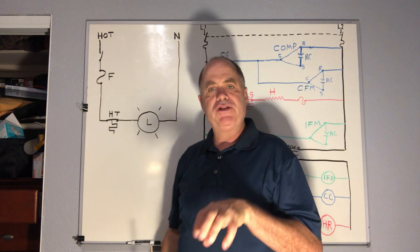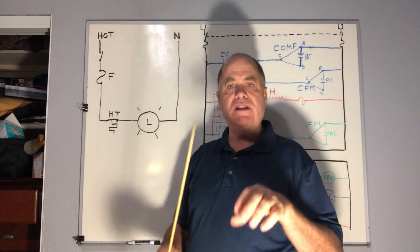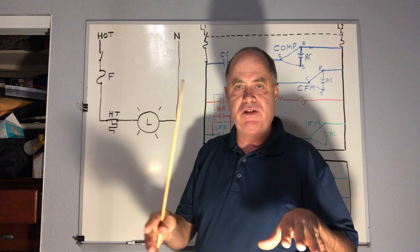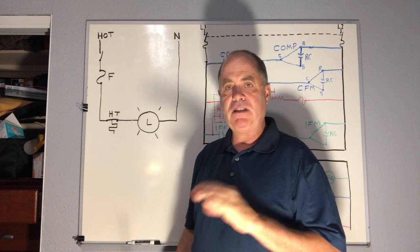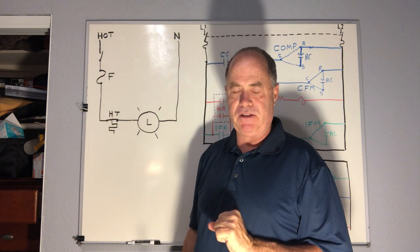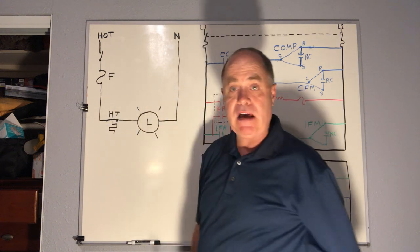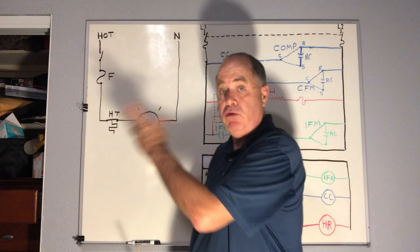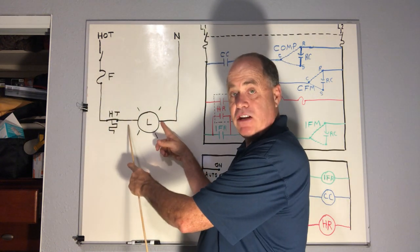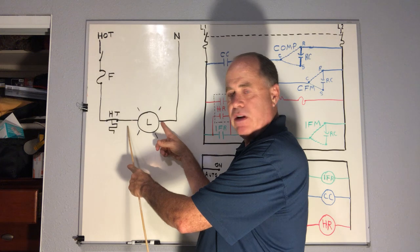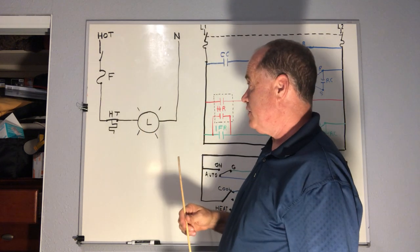When we say volts, we're not saying whether something is hot or not — we're saying what's the difference between two points. Is there a potential difference? So even if this light bulb were to burn out or you unscrewed the light bulb, you would still have the potential, the pressure there, of 115 volts.